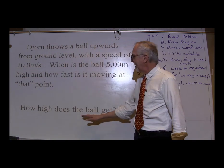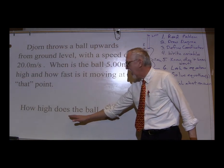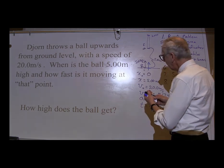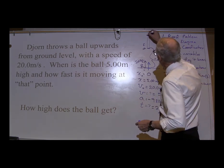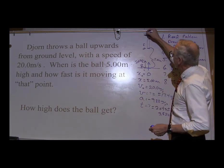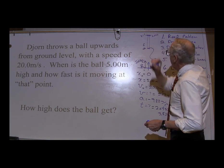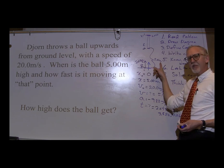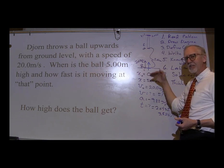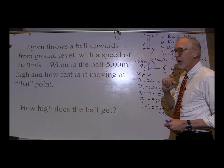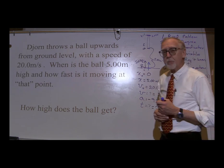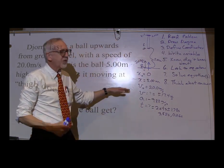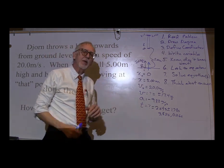The second part of the question asks how high does the ball get — in other words, what's the maximum height? What is the x value at its maximum height? So it's asking for something different than the 5 meter mark. Let's go back to our variables and think about what we can keep and what we cannot keep.